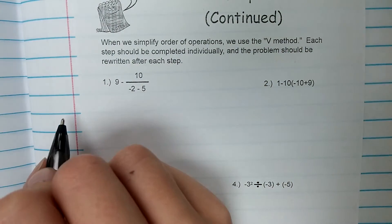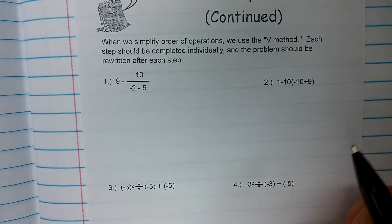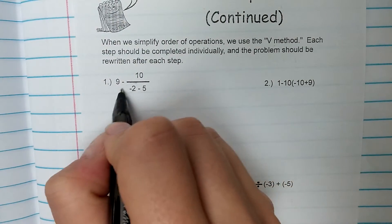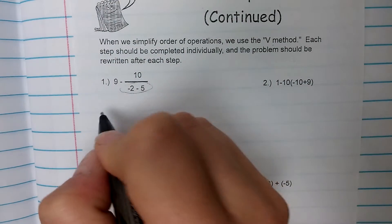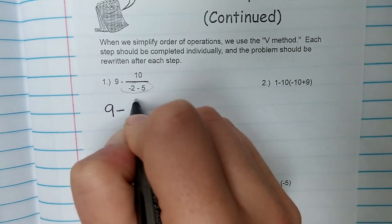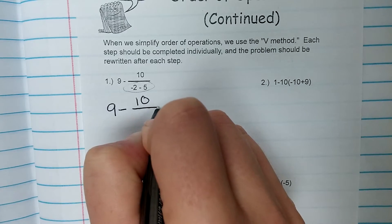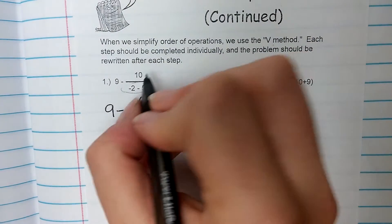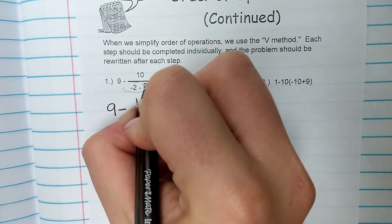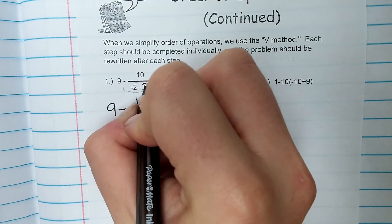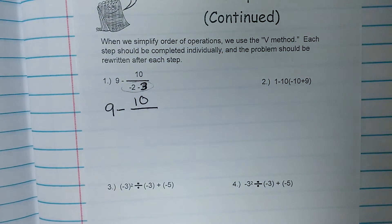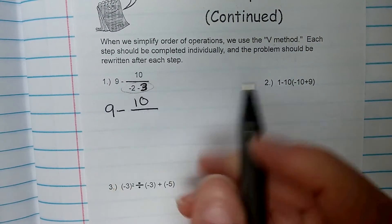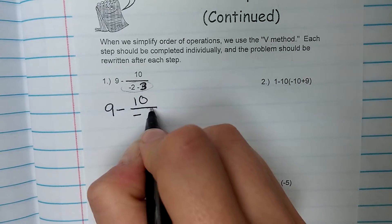So we're going to first simplify the denominator. You can use a V method or an underline method or a highlight method, whatever works for you. So I know that this is my first step right here. So this is 9 minus 10 over, and negative 2 minus 5 is going to give me negative 7. But we're going to change this question just a little bit to make it a little bit simpler. So let's do negative 2 minus 3. Negative 2 minus 3 gives us negative 5.